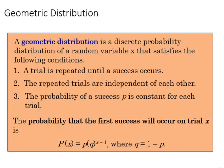We'll begin with the geometric distribution, which is a discrete probability distribution of random variable X that satisfies these conditions. One, a trial is repeated until success occurs. The thing that's variable is the number of trials it takes to achieve success. Two, the repeated trials are independent. Three, the probability of success is constant for each trial.